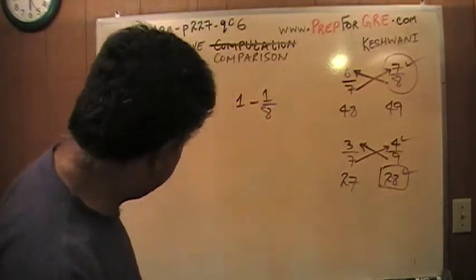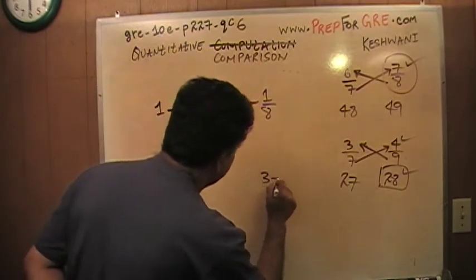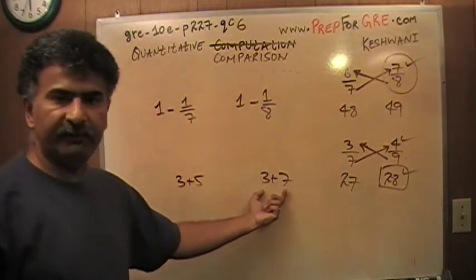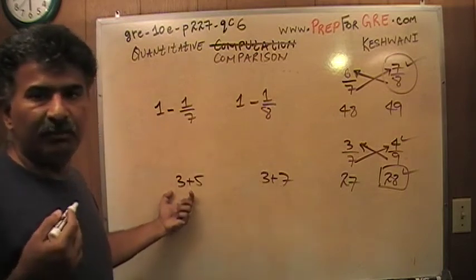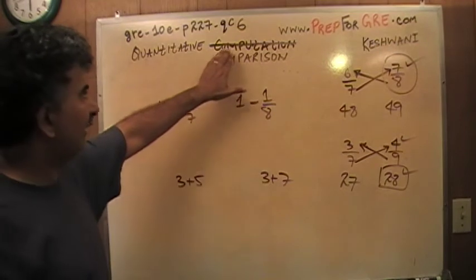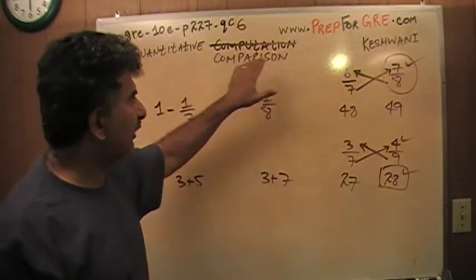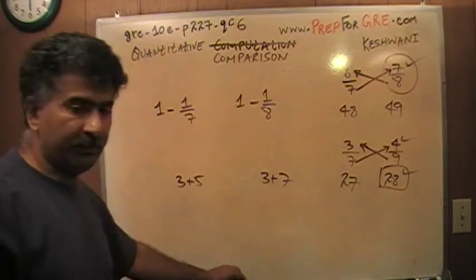Well, very first thing you have to realize is that if I ask you to compare 3 plus 5 versus 3 plus 7, and if you sit there and go 3 plus 5 is 8 and 3 plus 7 is 10 and then tell me that 10 is bigger than 8, you missed the bloody point of it. These questions are called quantitative comparison. Hence, the emphasis on the comparison. I wrote down the word computation, I crossed it out and I wrote down comparison. We are asked to compare the two things, not compute the bloody things.